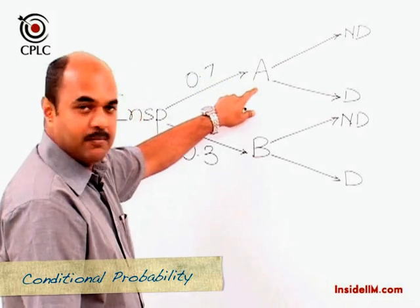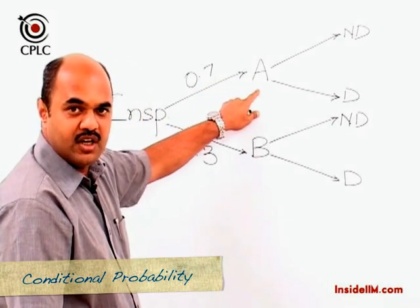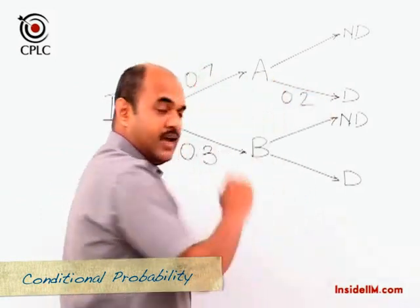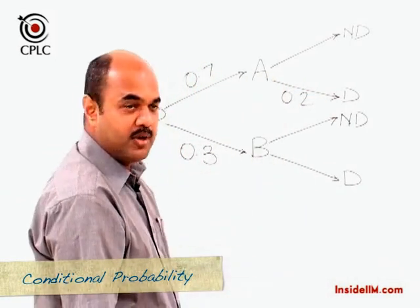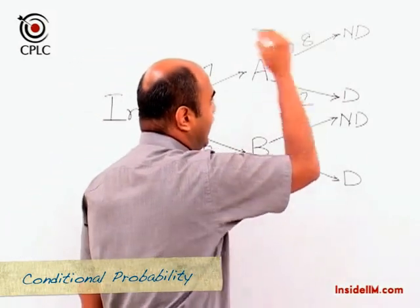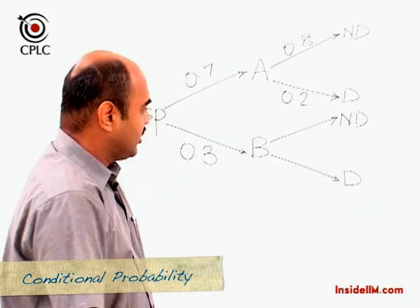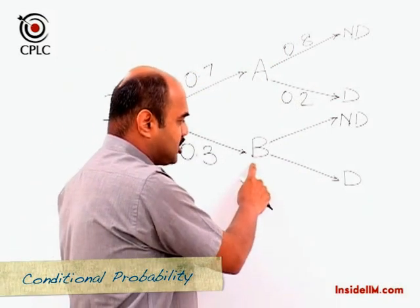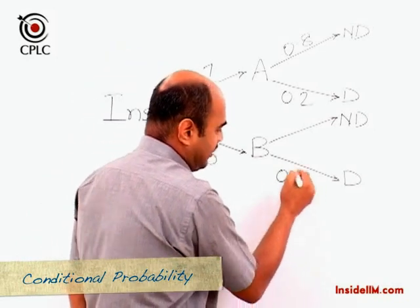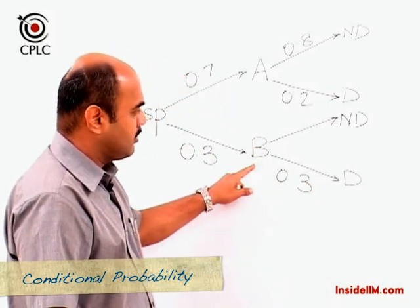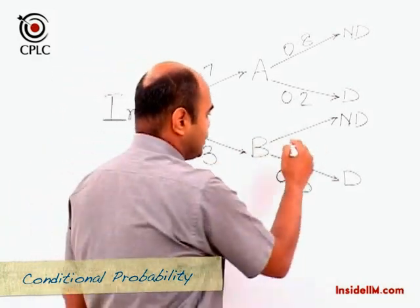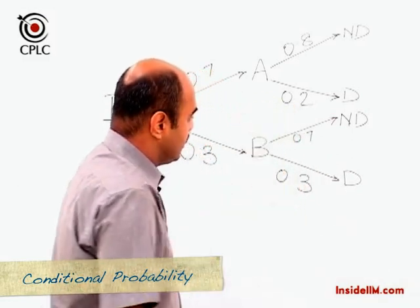The probability that machine A produces a defective article is 0.2, and hence the probability that machine A produces a non-defective article is 0.8. Further, the probability that machine B produces a defective article is 0.3, and hence the probability that machine B produces a non-defective article is 0.7.